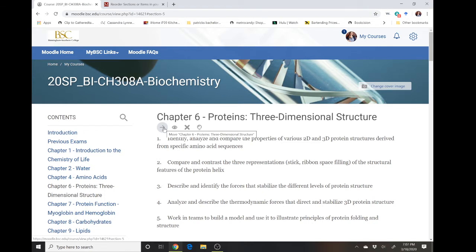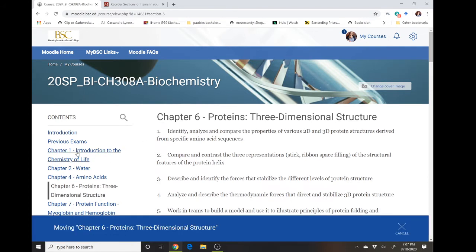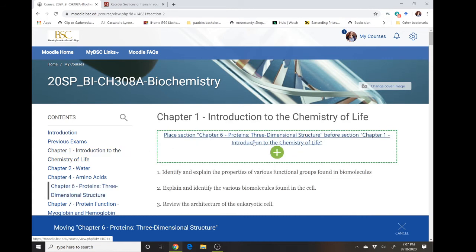So if I wanted to move chapter 6 and have it before chapter 1, I would click the arrow and I would then click the chapter that I want to put it ahead of, or the topic that I want to put it ahead of, and then I would say place chapter 6 here.